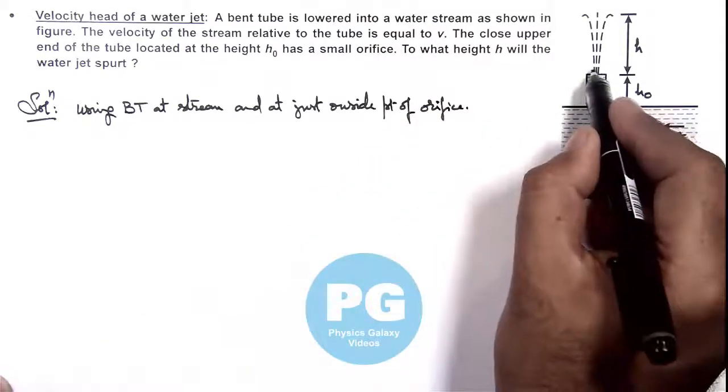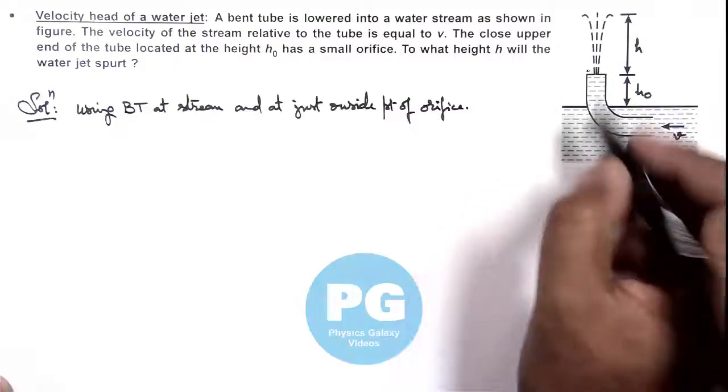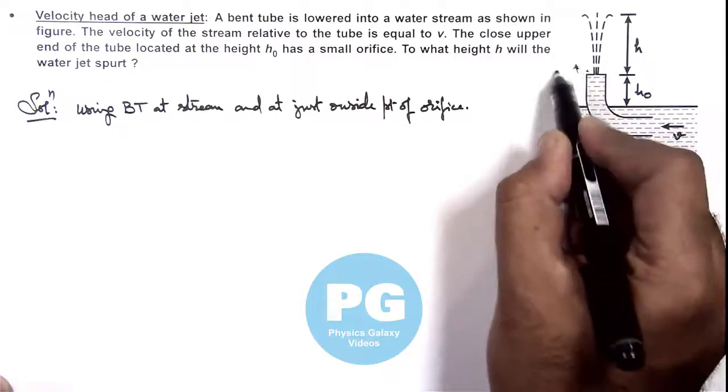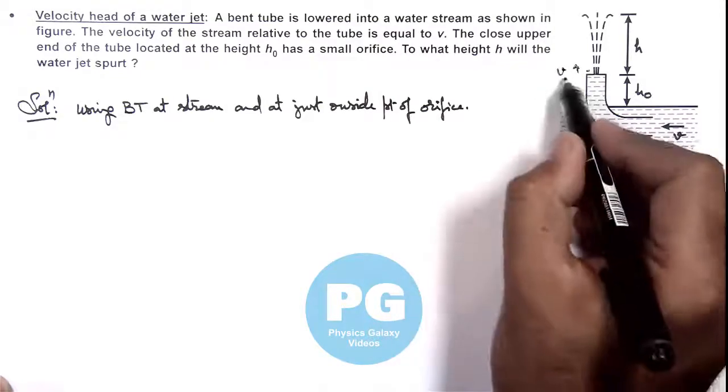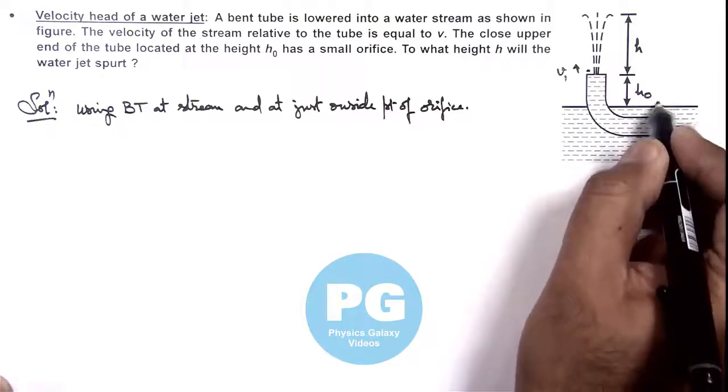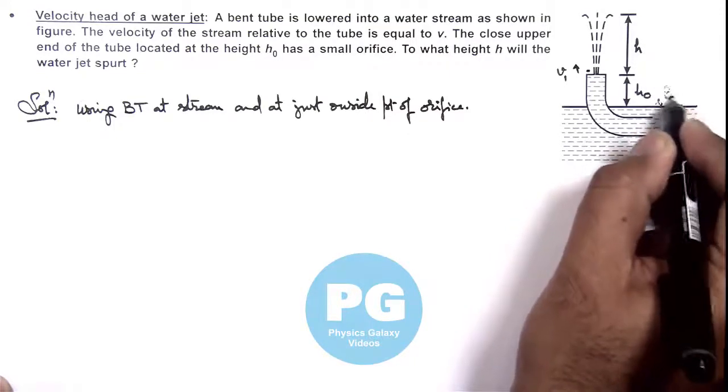Then we can see at just outside point of orifice, the pressure is atmospheric and the liquid is coming out at velocity v_1. And the stream is having velocity v and here also the pressure is P_atmospheric.